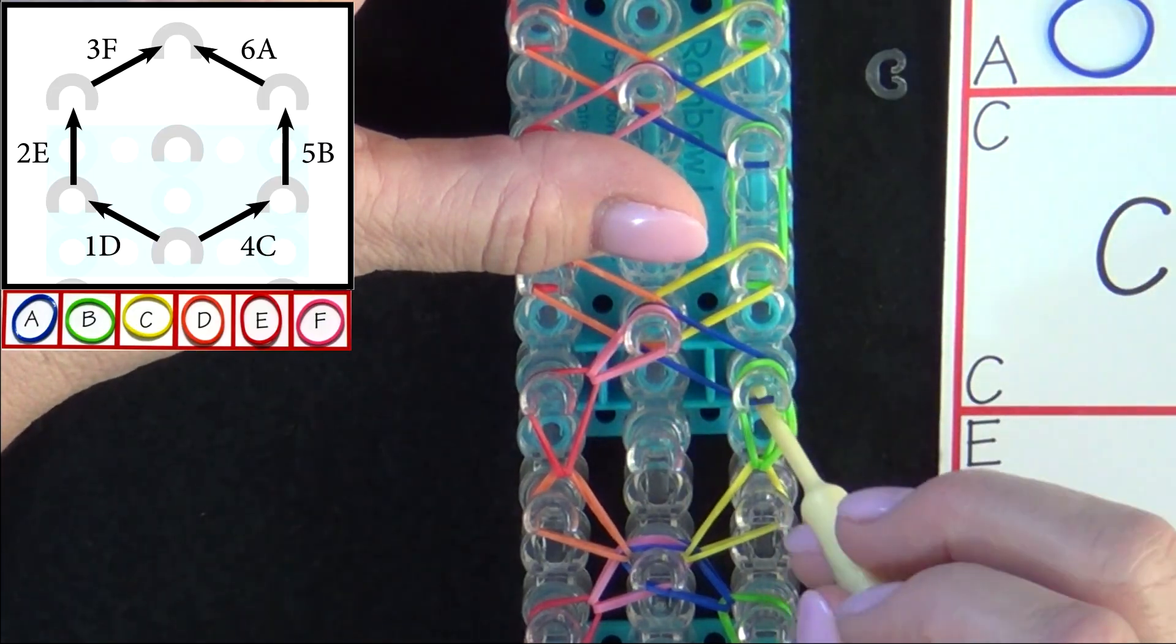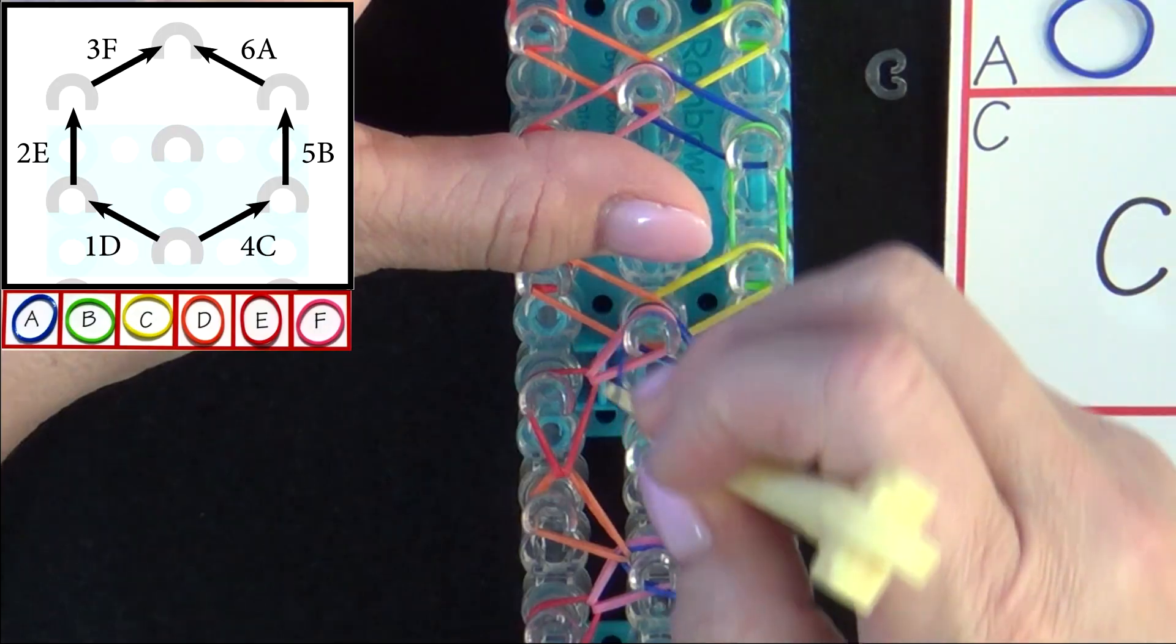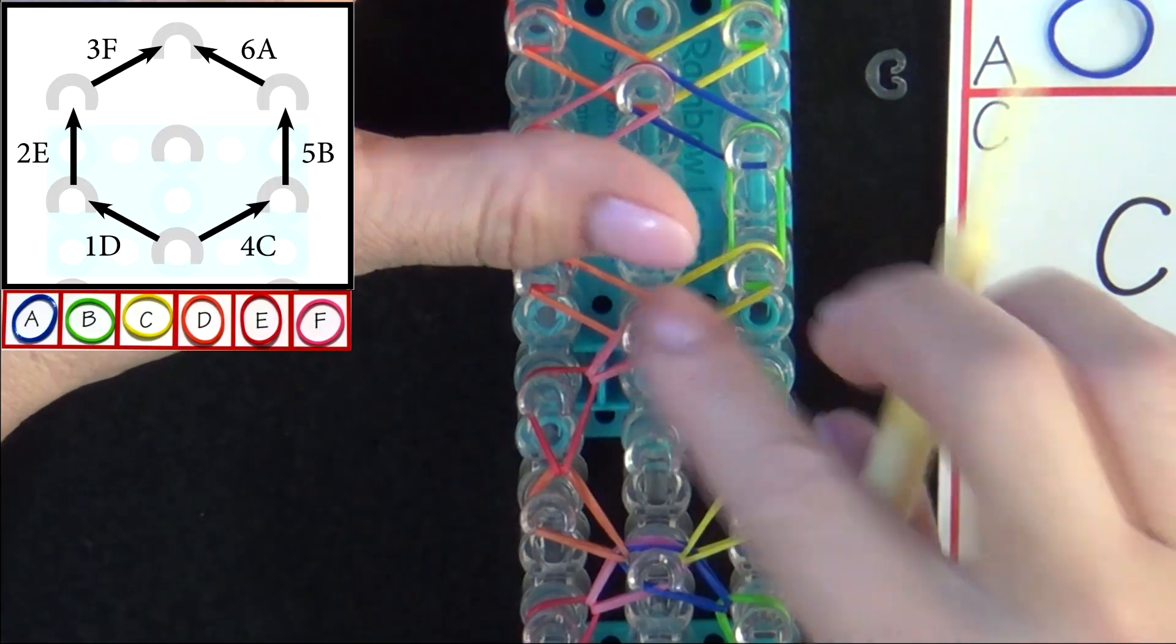6A will be looped to the center. And there we've completed looping our second hexagon.